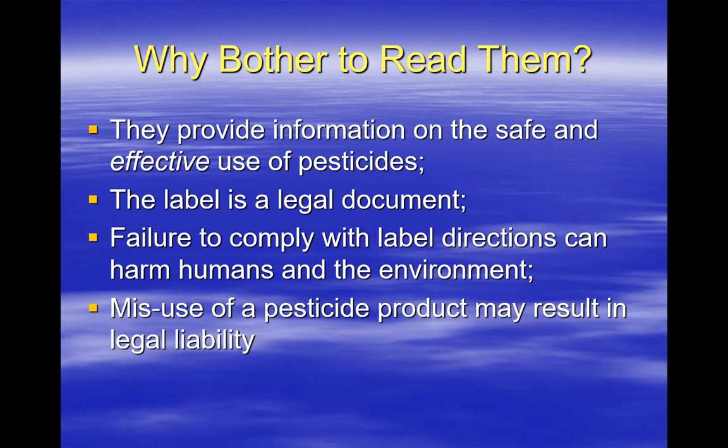If the label directions are not followed, the result may be an adverse effect to humans or the environment, and in addition to enforcement action, an applicator or company may face legal liability. All the information an applicator needs to apply a pesticide safely is included on the label with very few exceptions. For example, certain types of restricted use pesticides will require an applicator to go to a company webpage and view additional information that becomes part of a pesticide label by reference.